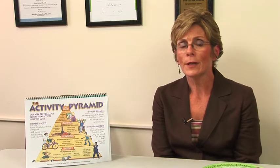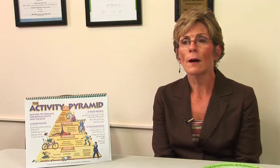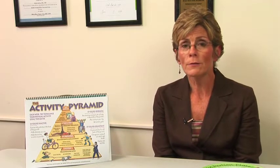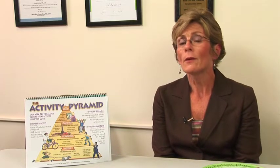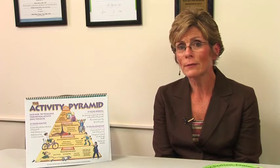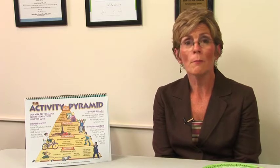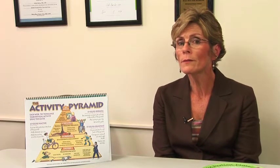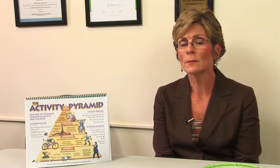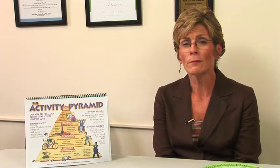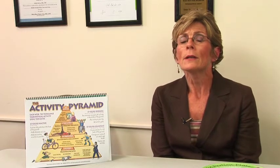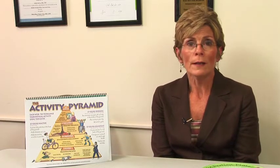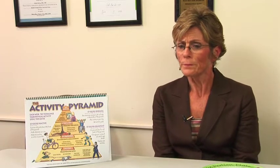Some of the risk factors for diabetes are if you're over the age of 40, if you have a family history of diabetes — your mother or your father had diabetes — or one of them had heart disease, especially if they died young from a heart attack. If you or any of your siblings have diabetes also.